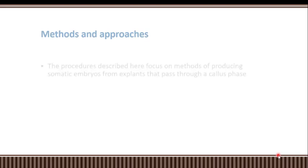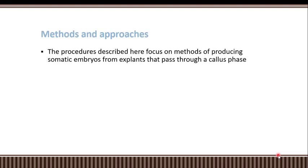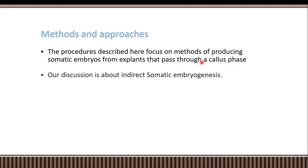Turning to the methods and approaches used for somatic embryogenesis: the procedure we are discussing is the indirect type, where embryos from the explant pass through a callus phase. In indirect somatic embryogenesis, the plant tissue first makes a callus — an undifferentiated mass of cells — and then we direct those callus cells toward embryo formation.